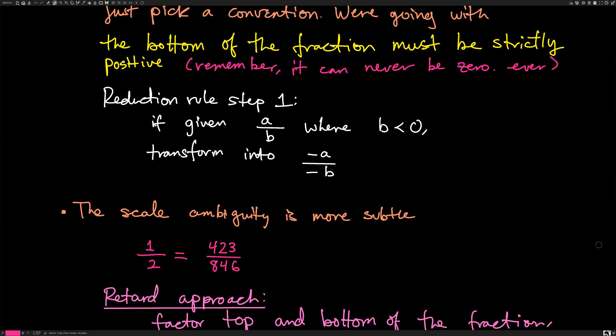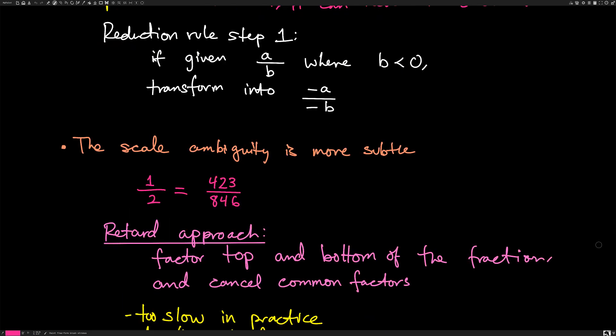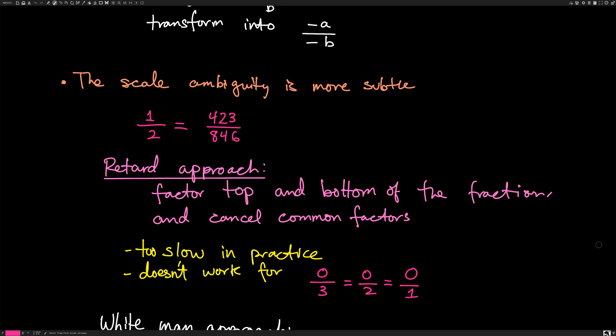The scale ambiguity is a touch more subtle. The basic problem is one-half equals 423 divided by 846. The naive approach to solving this is to factor the top and bottom of the fraction and cancel the common factors — but there are two problems. Number one, it's too slow in practice. Cryptography algorithms are based on the fact that factoring is generally very slow for large integers. Also, it doesn't work for zero divided by three or zero divided by two, because factoring zero is a special case. You could code a special case for that, but that's annoying.